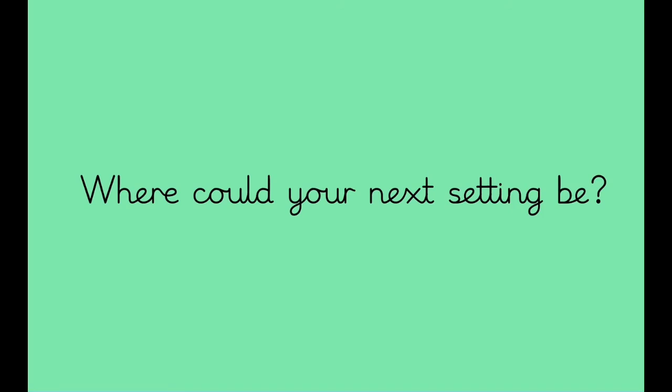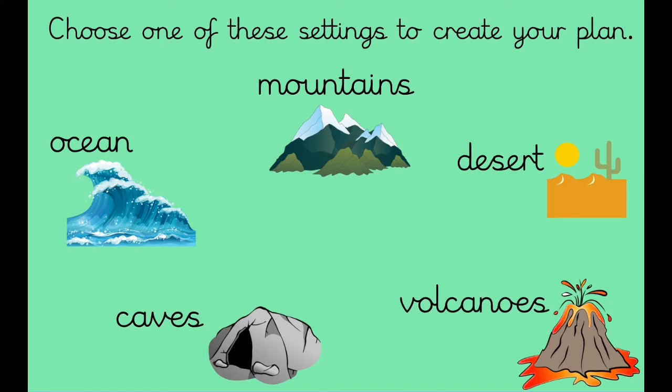What you are going to think about is where could your next setting be. You've got some choices. You need to choose one of these settings to create your plan: you've got an ocean, mountains, the desert, volcanoes, or caves. The reason we want you to choose one of these in particular is when we are back at school you will be having a Descriptosaurus lesson where you choose lots of amazing adjectives and things to add further to your plan based around these. So please don't go off on a tangent and choose somewhere else - choose one of these five.